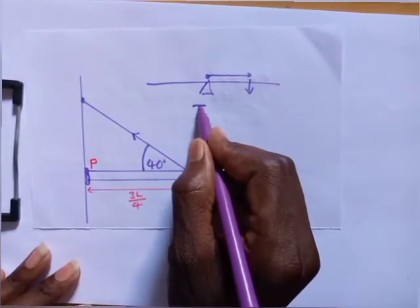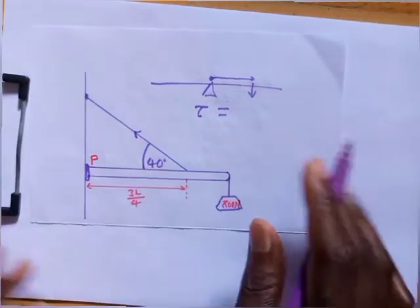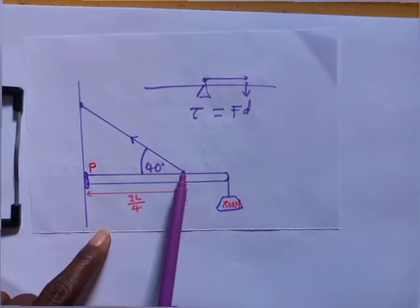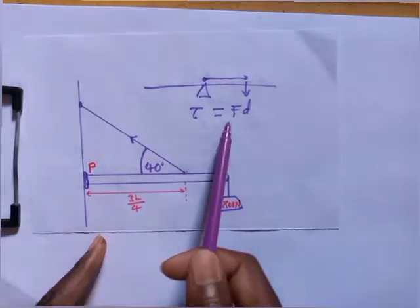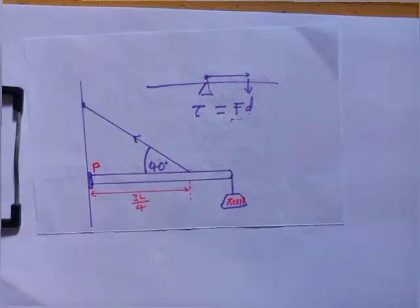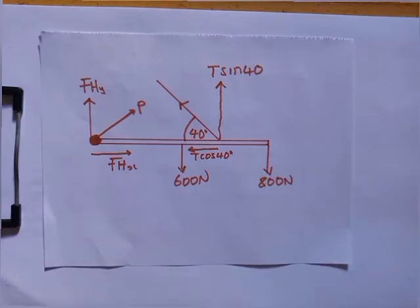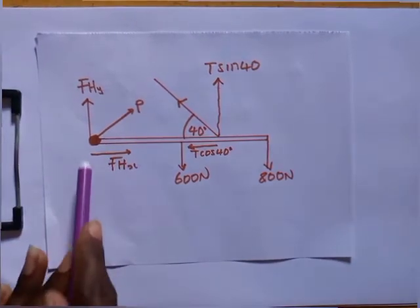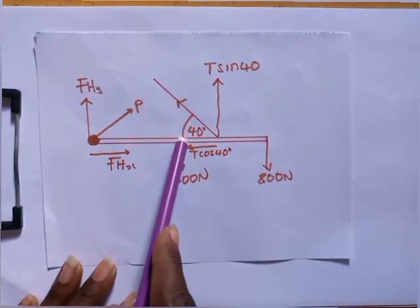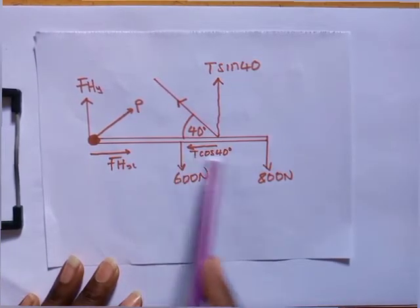Torque, denoted by the symbol τ, is equal to force multiplied by distance. The forces at the hinge point do not produce torque due to zero displacement. The free body diagram shows the forces at every point: the beam has a weight of 600 N, which we place in the middle pointing downward, and an object at the end exerting 800 N downward.